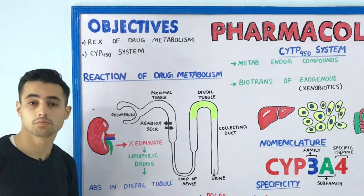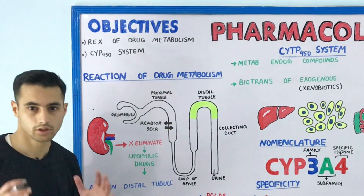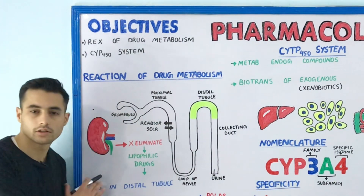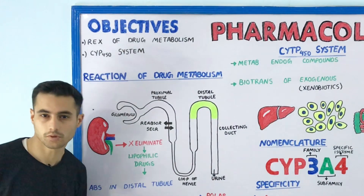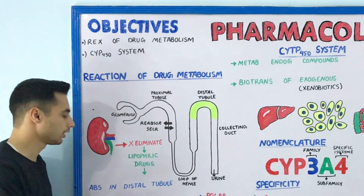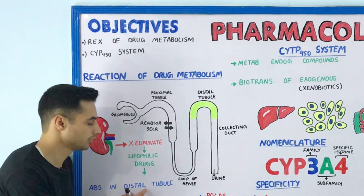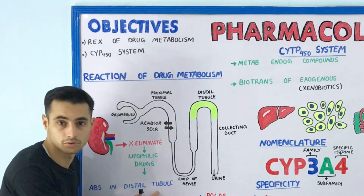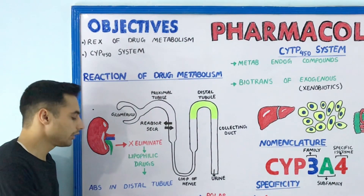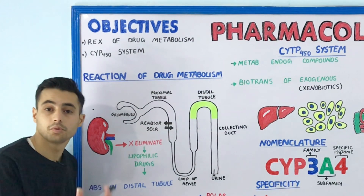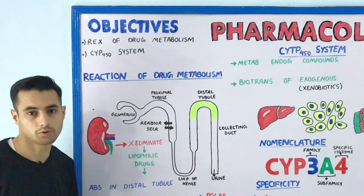We know that the kidney cannot eliminate lipophilic drugs from our body, because lipophilic drugs are again reabsorbed in our distal tubule. They are lipophilic — they cross the cell membrane — and we have to make these lipophilic drugs polar or water soluble in order to eliminate them from our body.